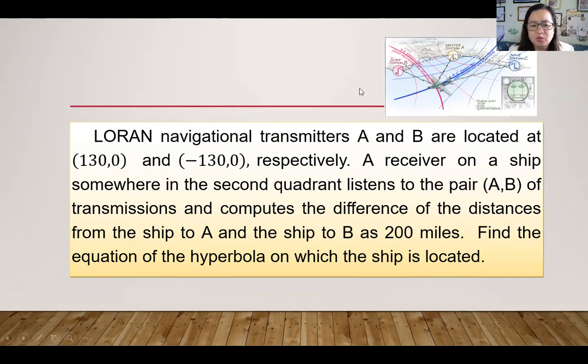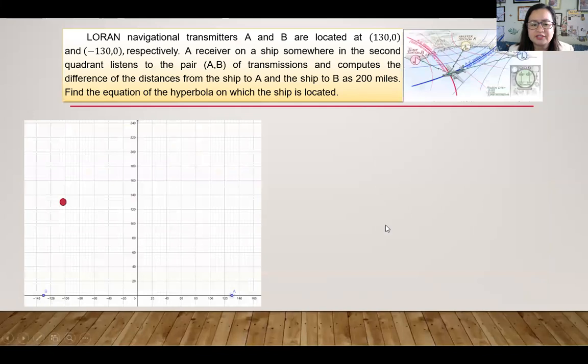So we plot the points on the coordinate plane, (130,0) and (-130,0). Then let's just estimate that this is the ship on the second quadrant, the dot.